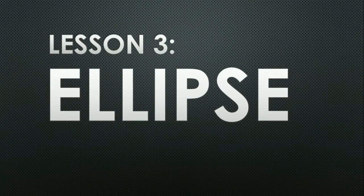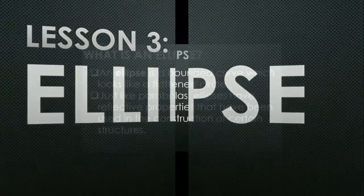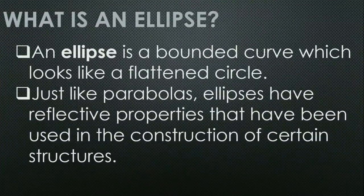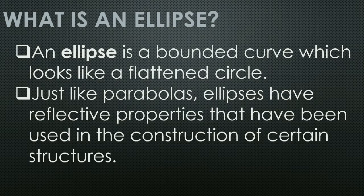What is the meaning of an ellipse? An ellipse is a bounded curve which looks like a flattened circle, or in short, what we often call 'oplong' (oval). Just like parabolas, ellipses have reflective properties that have been used in the construction of certain structures.